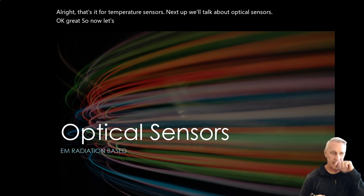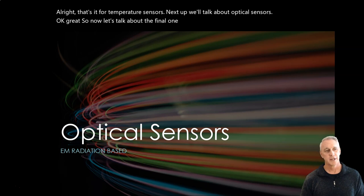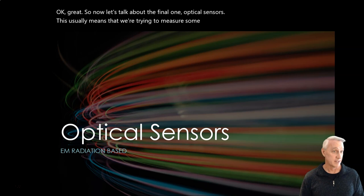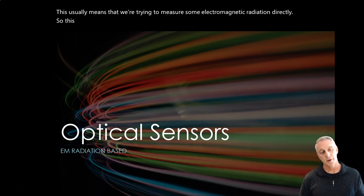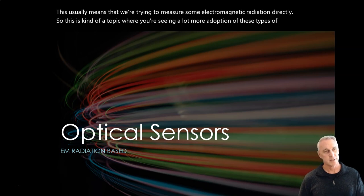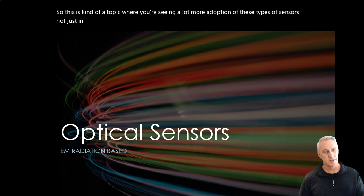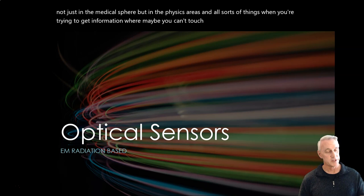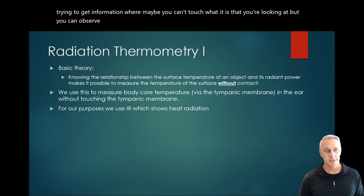Now let's talk about the final one: optical sensors. This usually means that we're trying to measure some electromagnetic radiation directly. This is a topic where you're seeing a lot more adoption of these types of sensors, not just in the medical sphere, but in physics and all sorts of areas when you're trying to get information where maybe you can't touch what you're looking at, but you can observe it or have cameras.